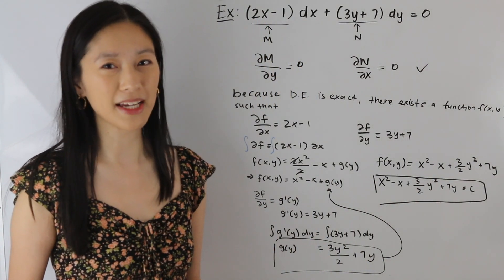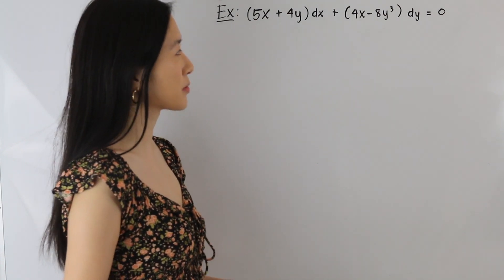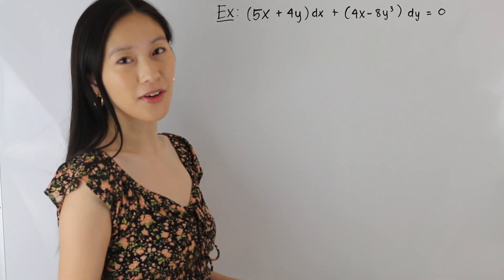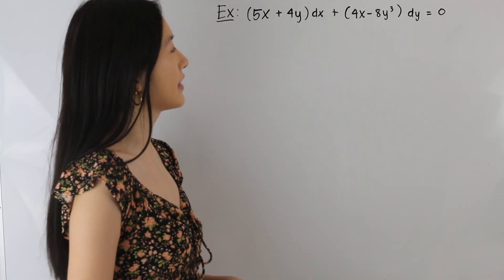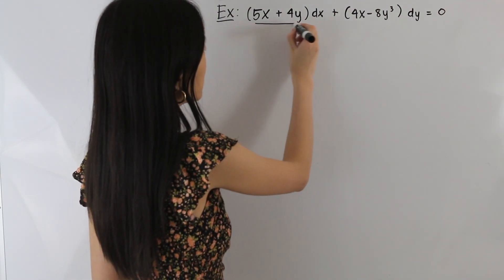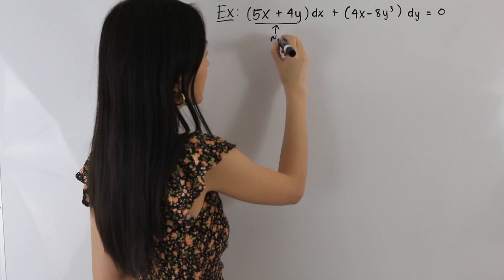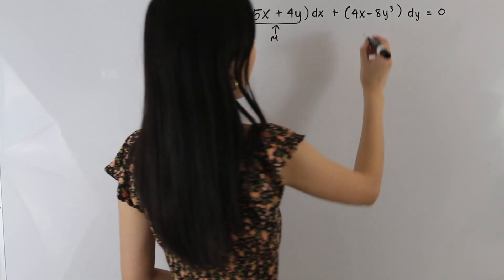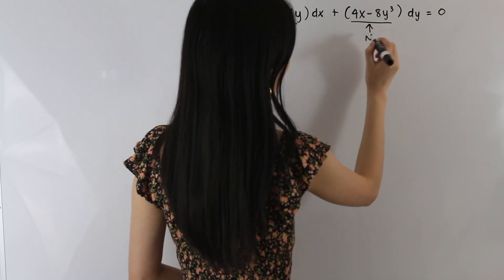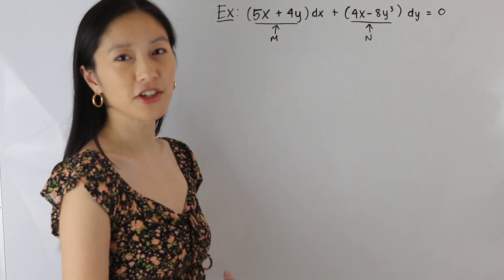Let's take a look at one more example. We have (5x + 4y)dx + (4x − 8y³)dy = 0. As a first step, let's label M and N: M = 5x + 4y, and N = 4x − 8y³.